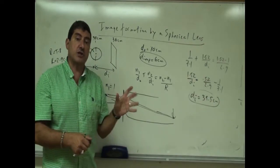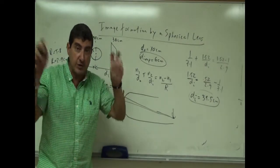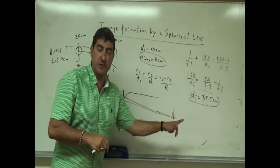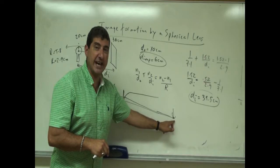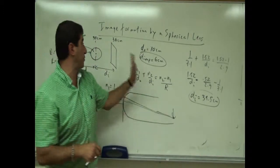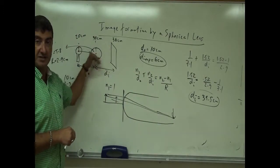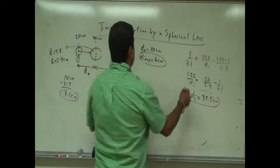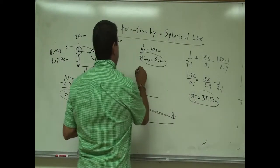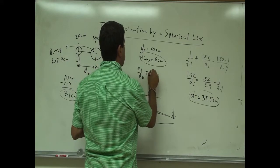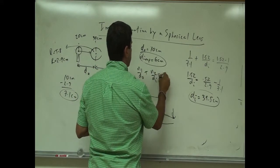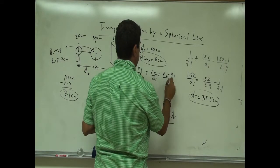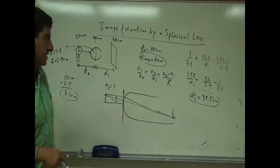That image, which never actually formed, would have been a real image if it had formed. Since it never formed, it acts as a virtual object for the back side of the lens. It's 39.5 centimeters from the front, so I'll use the same equation again: N1/DO + N2/DI = (N2 − N1)/R.